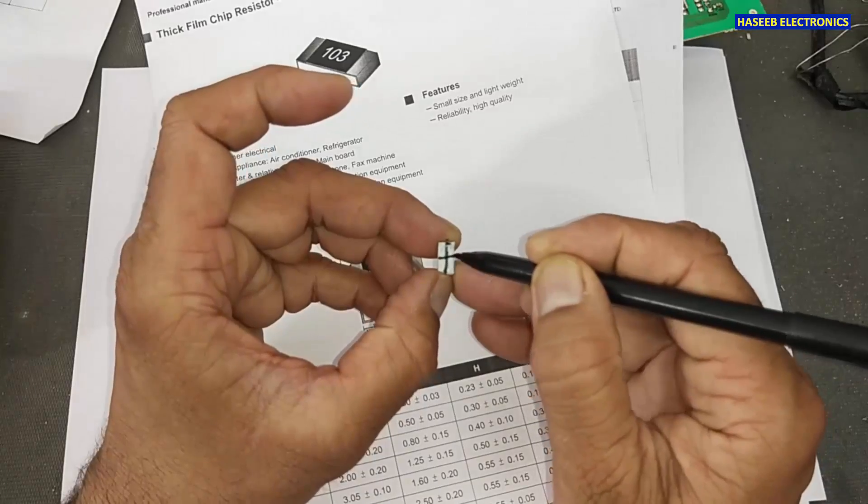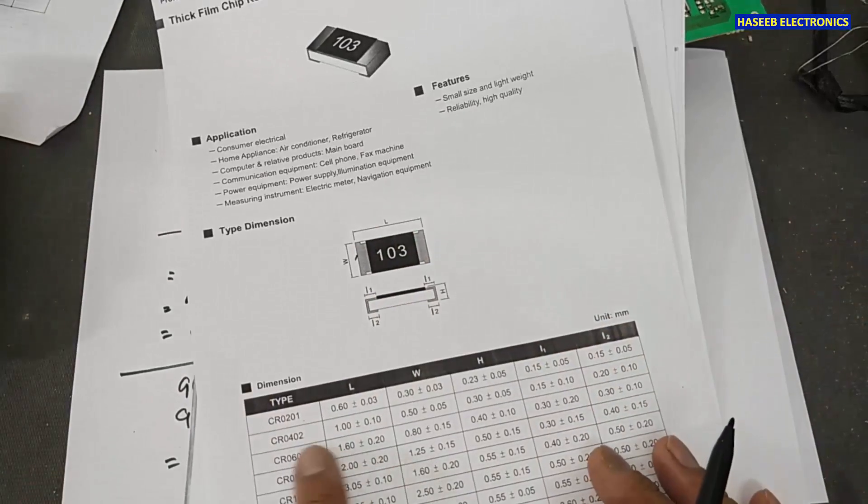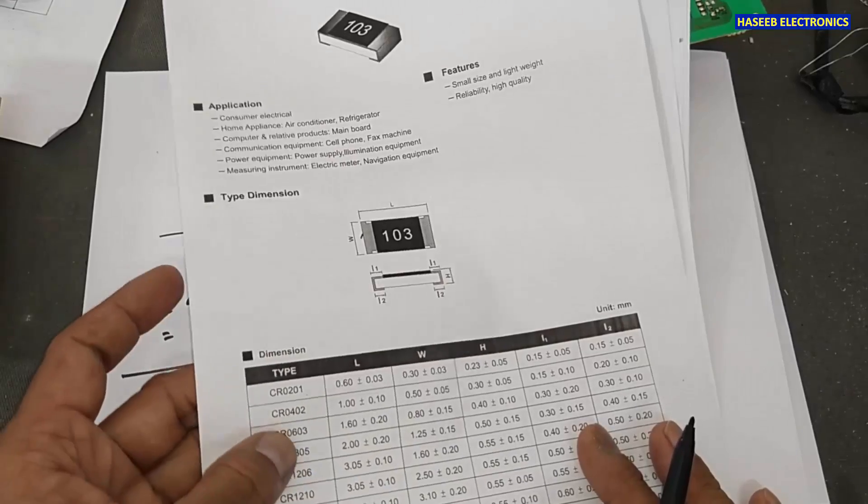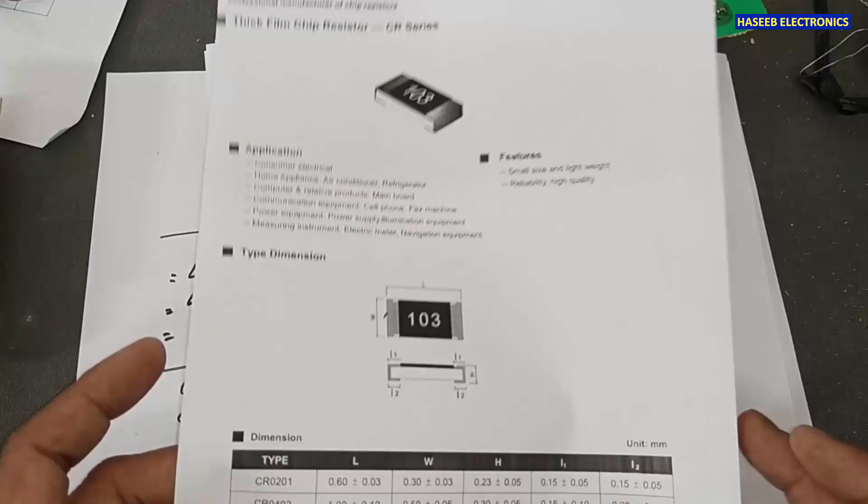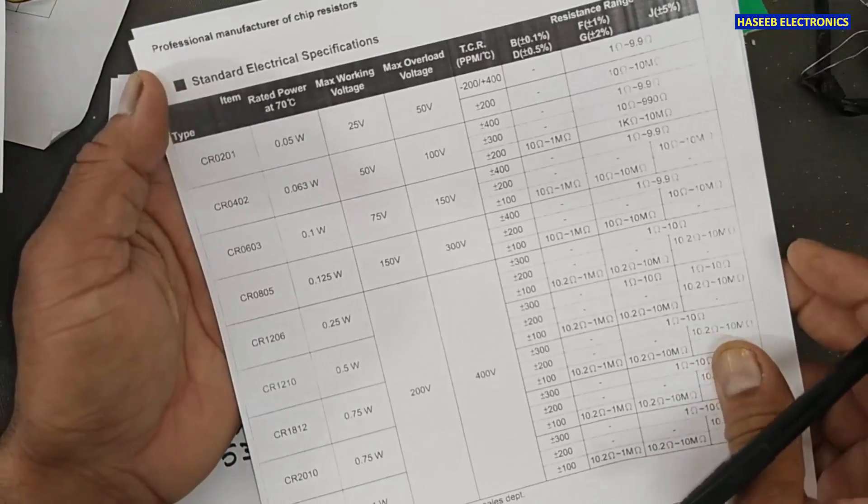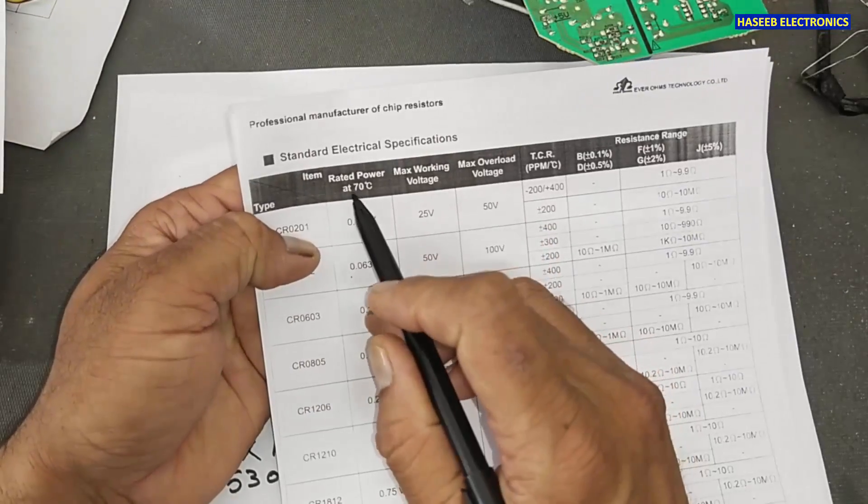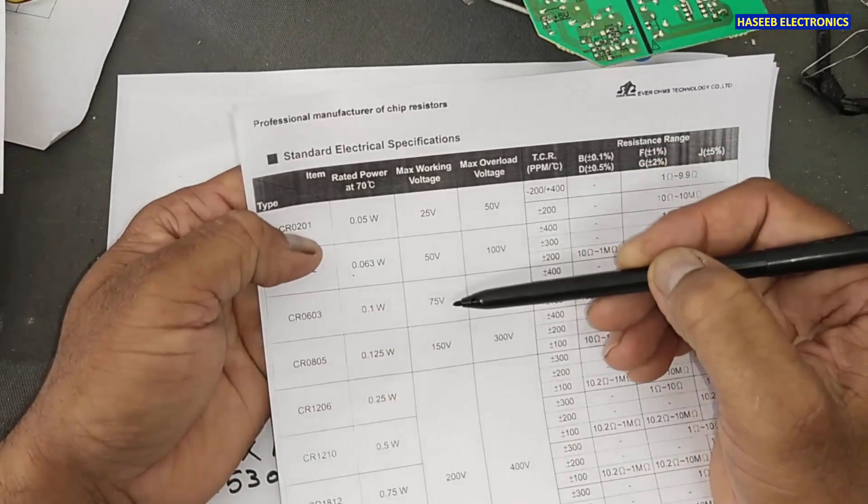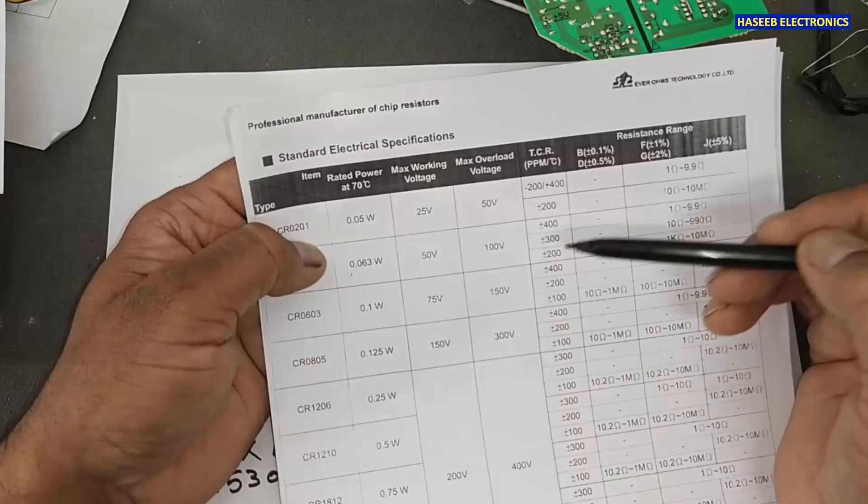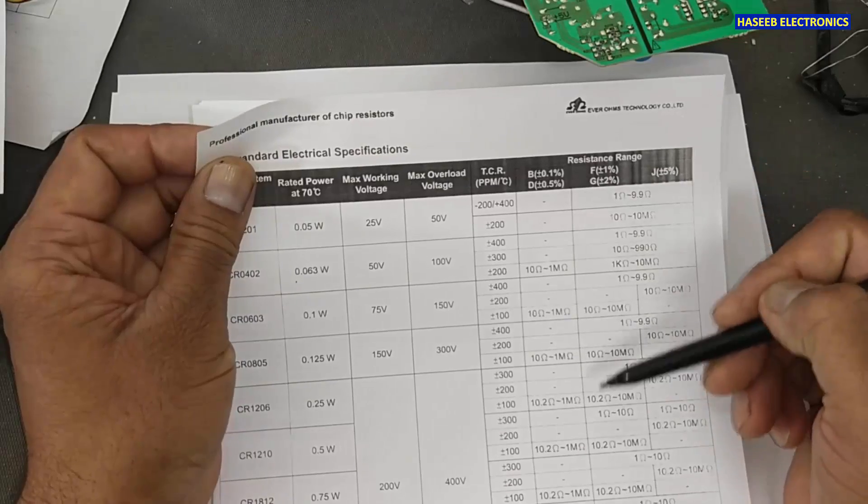Length, width, height. Then we will proceed to this package code. This is length, width and this side is height. These three measurements will give the code number. What is the code of that resistor? In this material, it is giving CR0402. This is package code. So from that package code, we will check the watt rating. It is 0.063 watt. Rated power at 70 degree centigrade. And working voltage maximum that is 75 volt. And maximum over voltage 150 volt. Then here is temperature coefficient. And resistance range.